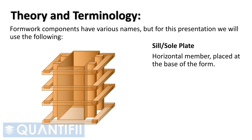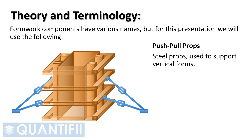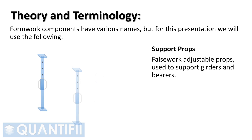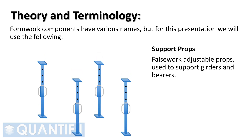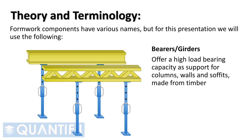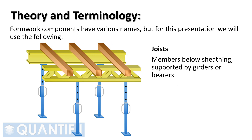Sill, or sole plate — a horizontal member placed at the base of the form. Push-pull props — steel props used to support vertical forms. Support props — falsework adjustable props used to support girders and bearers. Bearers, or girders — offer a high load-bearing capacity as support for columns, walls, and soffits, made from timber. Joists — members below sheathing, supported by girders or bearers.